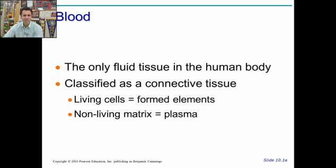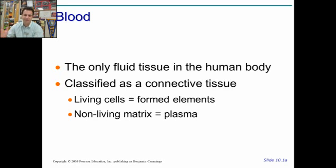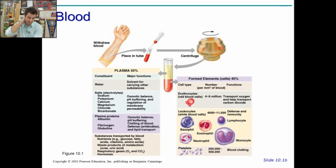Blood is the only fluid tissue in the human body. It's made up of two parts: living cells, which we call formed elements — a weird name, I know — and non-living matrix, which is the plasma. So cells and plasma, the liquid.